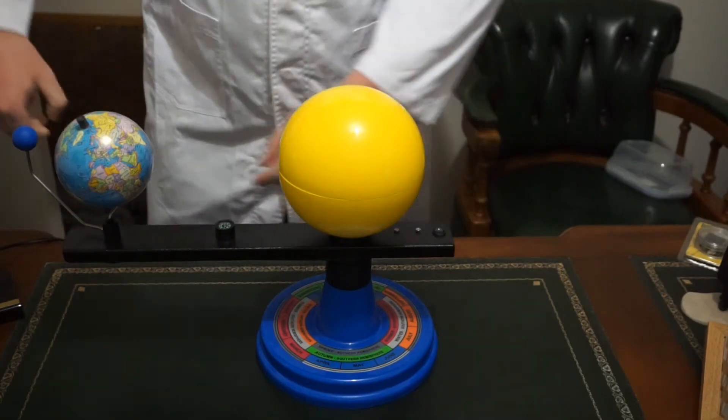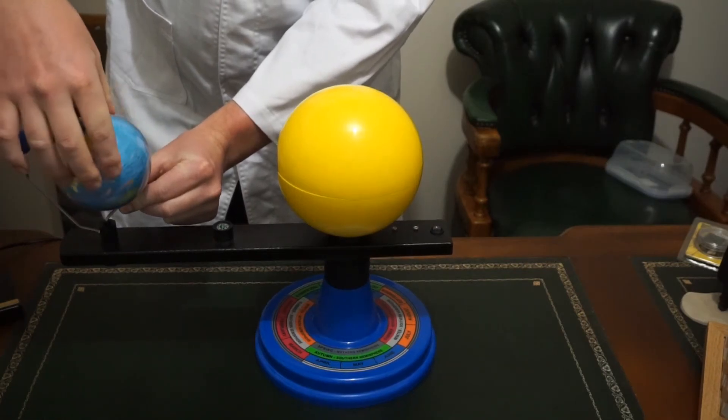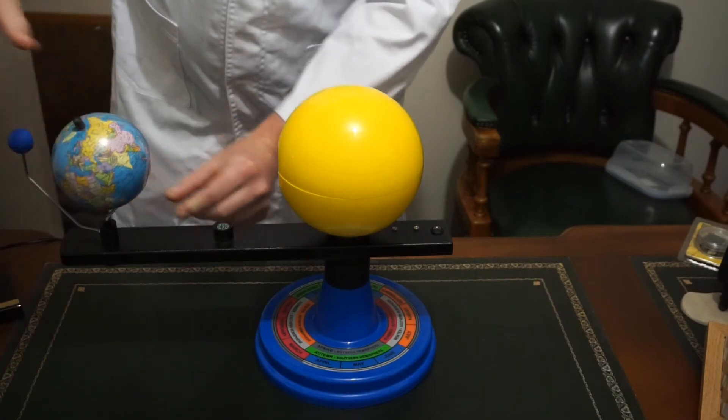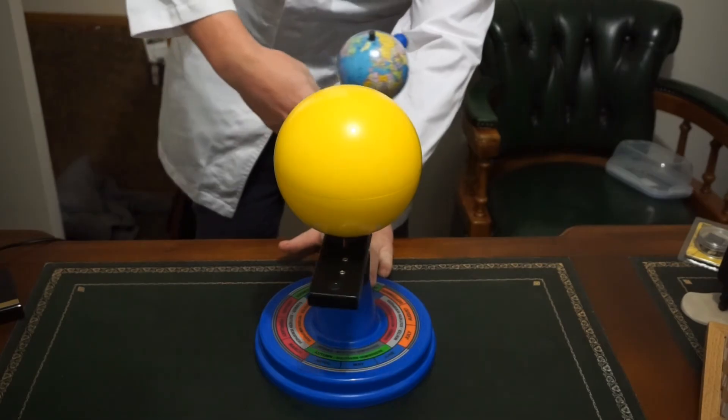The Earth doing one complete spin on its own axis is one day, and while it's spinning on its own axis, it's also orbiting around the Sun. And it takes 365 days for it to do one complete journey around the Sun, and we call this a year.